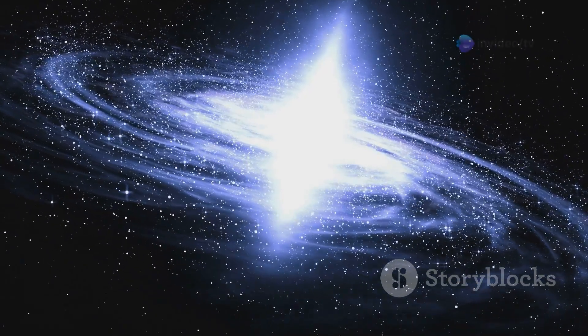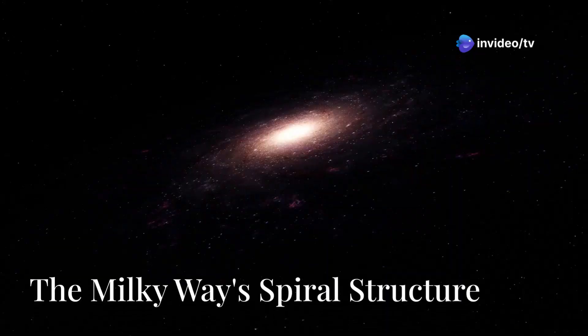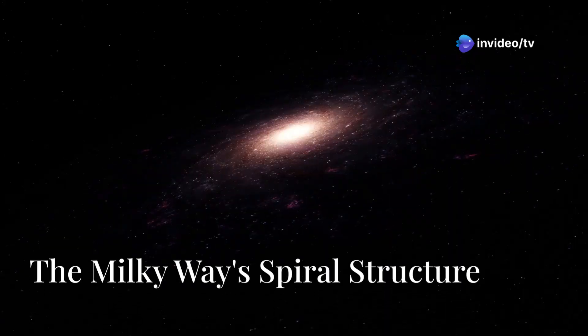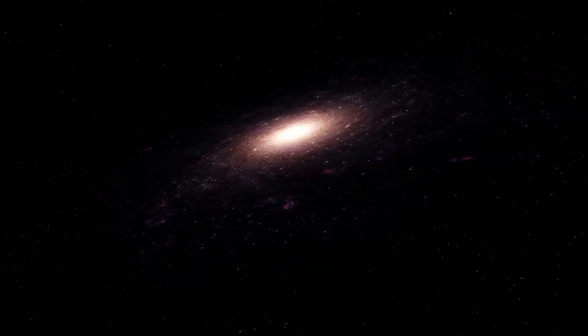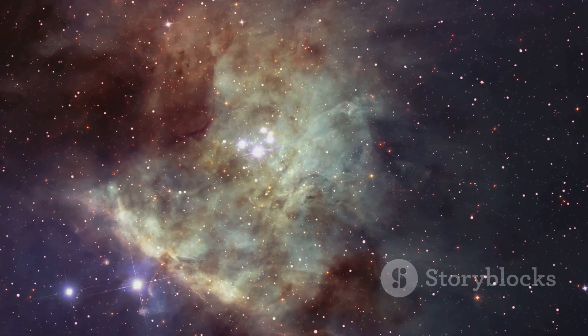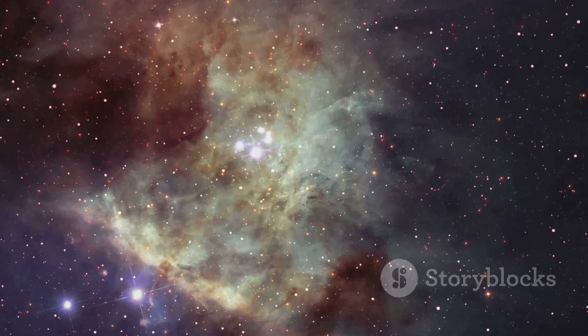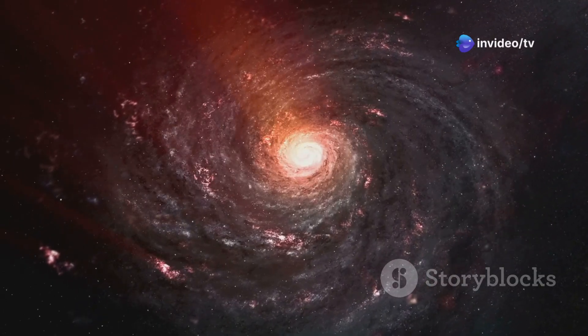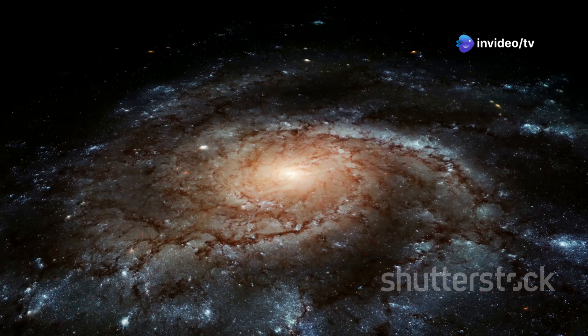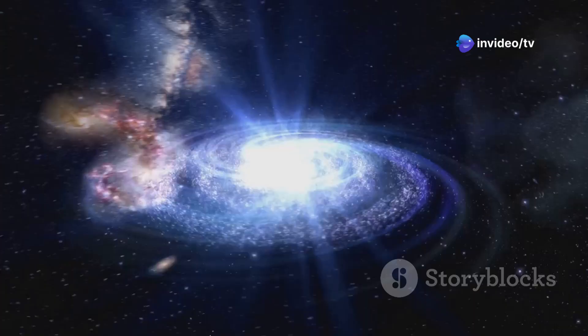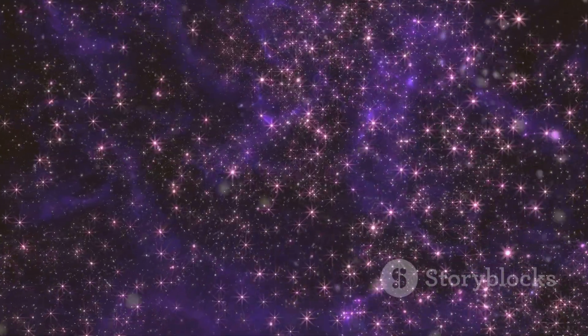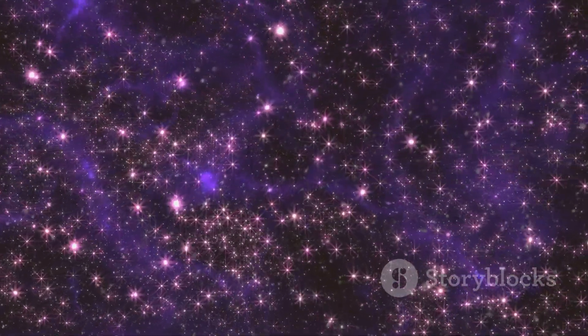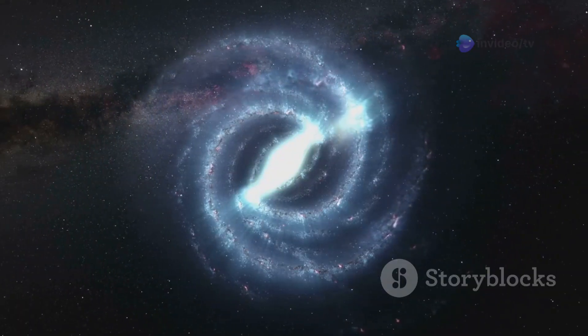The Milky Way is shaped like a giant disc with a central bulge. This bulge is surrounded by a halo of stars and mysterious dark matter. Extending outward from the bulge are the galaxy's spiral arms. These arms are not solid structures - they are regions of higher density within the galactic disc. Imagine a traffic jam in space where stars, gas, and dust are more concentrated.